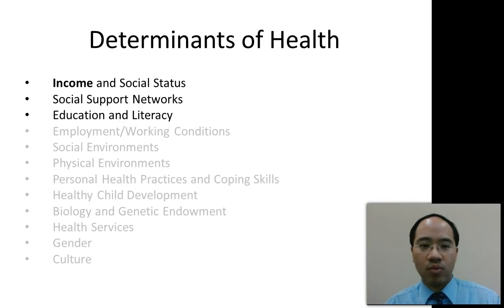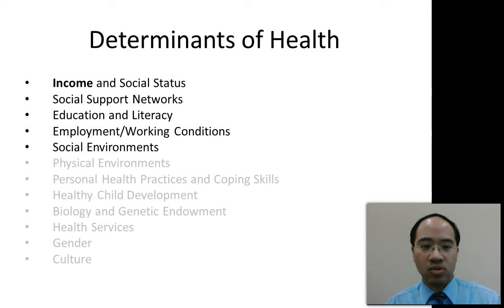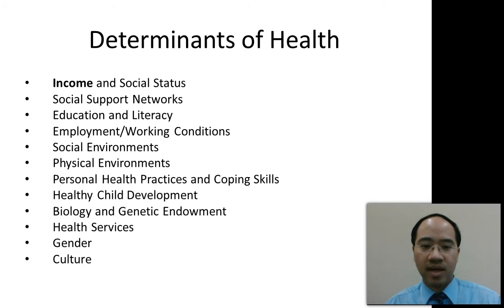Additional determinants include social support networks, education and literacy, employment and working conditions — having excellent working conditions is a good determinant — social environments, physical environments, personal health practices and coping skills, healthy child development, biology and genetic endowment, health services, and gender and culture.